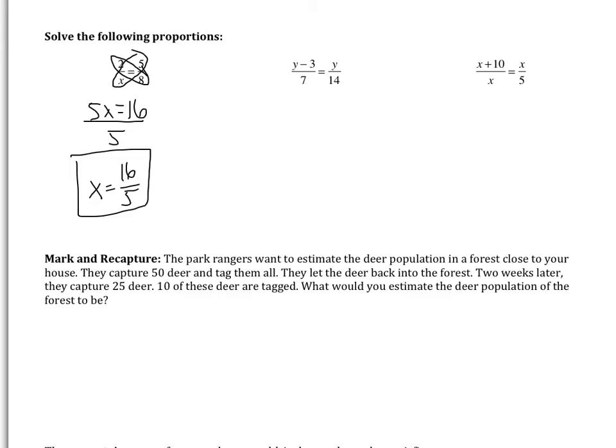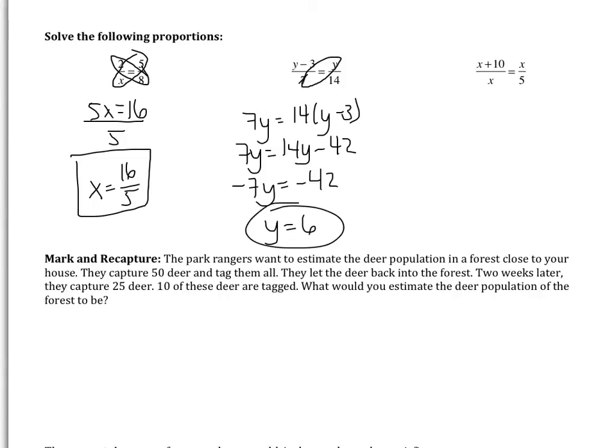Let's see how we did. y multiplied by 7 is 7y, and then I have 14 multiplied by y minus 3. This becomes 7y equals 14y subtract 42. If I subtract 14y, I get negative 7y equals negative 42. So y equals positive 6. Hopefully we got that one right. If we messed up anything, my guess is that we forgot to distribute the 14, because that can be difficult to remember. If you have any questions, please make sure you bring them to class.